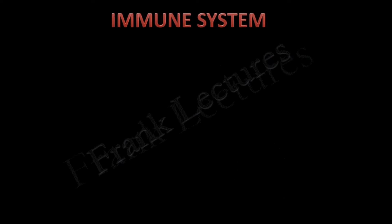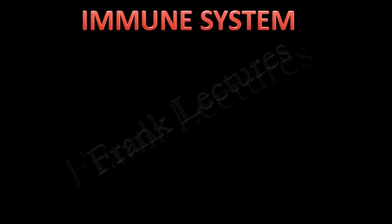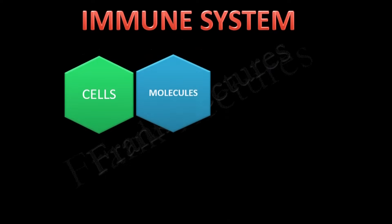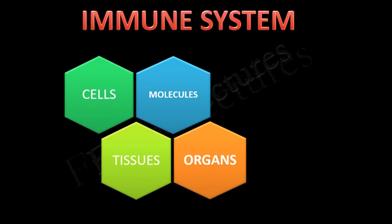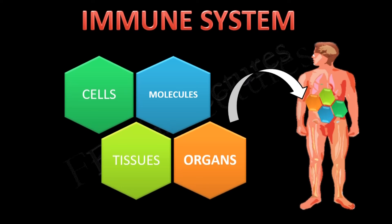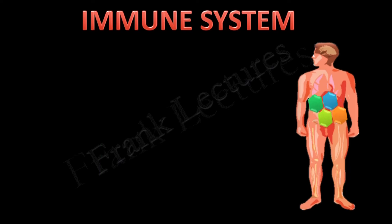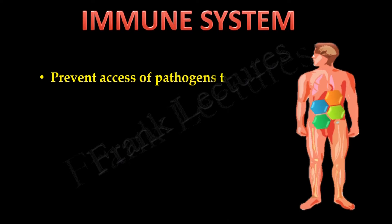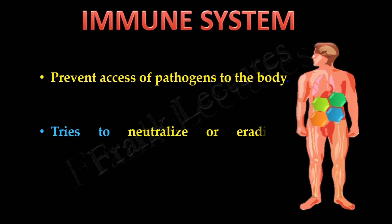Immune system is the collection of cells, molecules, tissues and organs within an organism. It is the immune system which mediates resistance to infections. These components work together to prevent access of pathogens to the body, and if an infection has been established, it tries to neutralize or eradicate it.